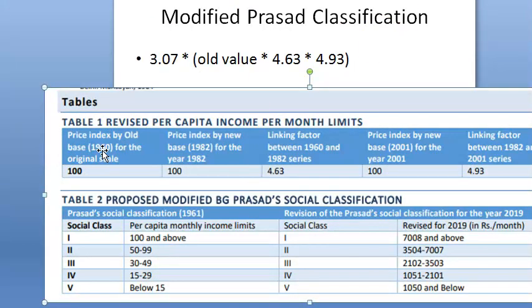The significance of BG Prasad's classification is that it considers per capita monthly income of the family, not the individual. However, it does not look at other social factors — only income. Though this video was recorded in 2020, the last available data is from 2019. Modified Prasad's classification is done.